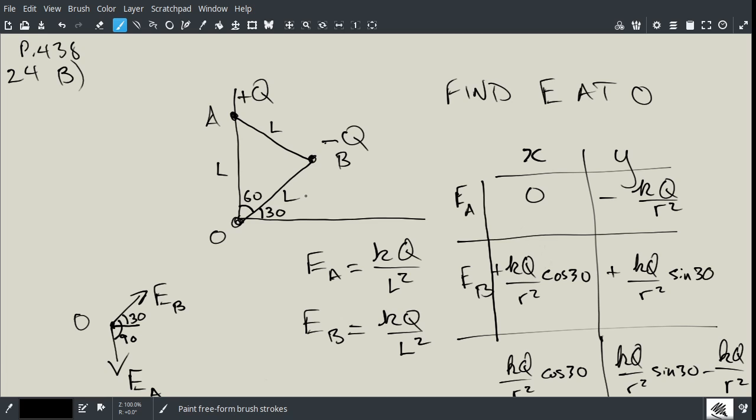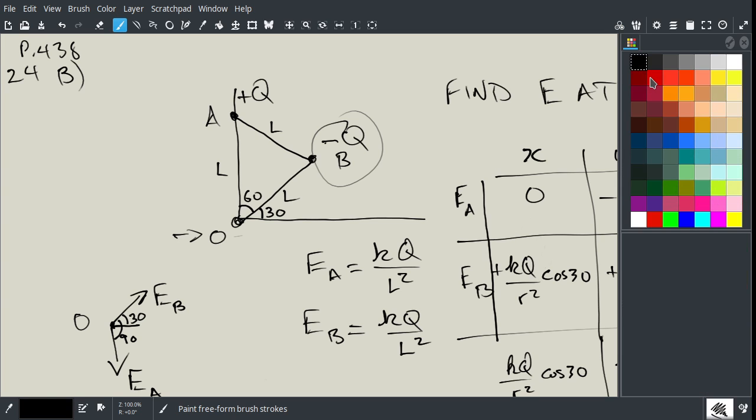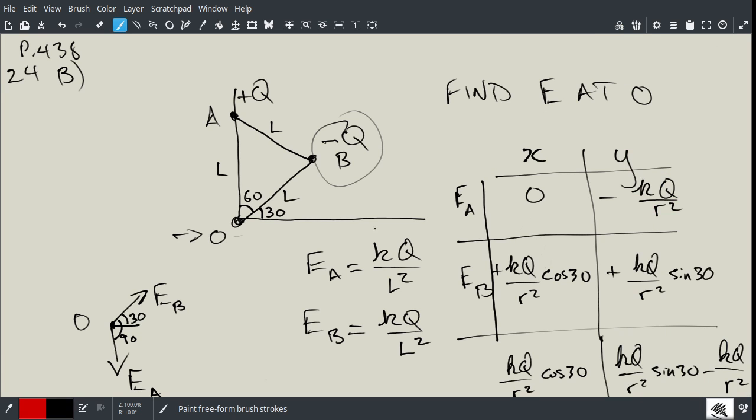Okay, so here's the solution to number 24, specifically B. What I've done here is I've drawn the diagram. This is point O here, and point A and point B. And what they've done in this specific question is they have changed the sign of B to negative.